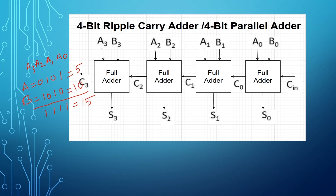Now I am going to show you how to add using this 4-bit ripple carry adder. The sum of a full adder is A XOR B XOR C_in, and carry is equal to AB plus BC_in plus C_in·A. So here A0 is 1, B0 is 0, A1 is 0, B1 is 1, A2 is 1, B2 is 0, A3 is 0, and B3 is 1.